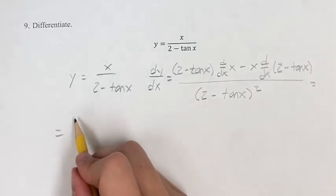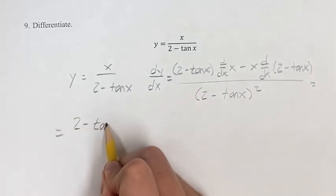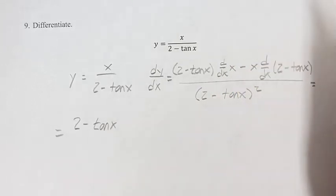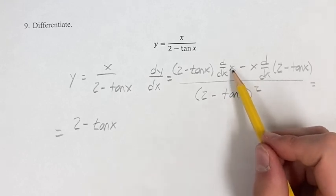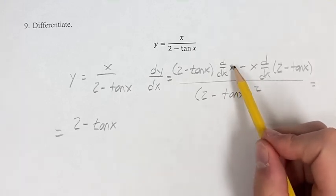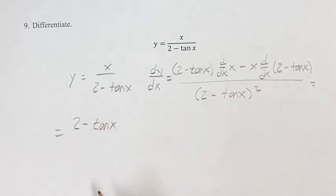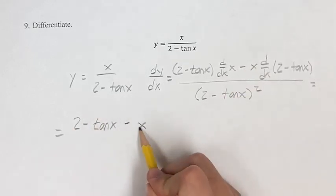So we have 2 minus tangent x times the derivative of x. Well, this is a linear term, so its derivative is its coefficient, and since this is x, it's just 1x, so its coefficient is 1. So this is 2 minus tangent x times 1, which is just 2 minus tangent x. This is minus x,